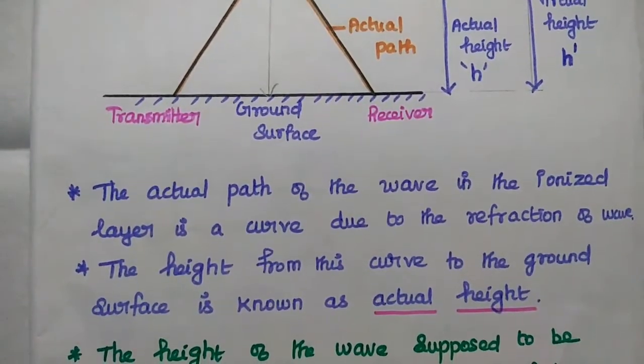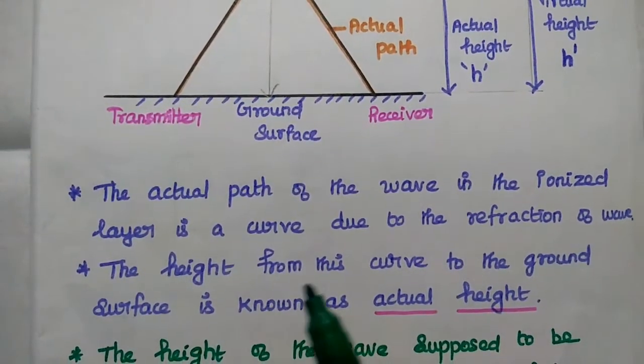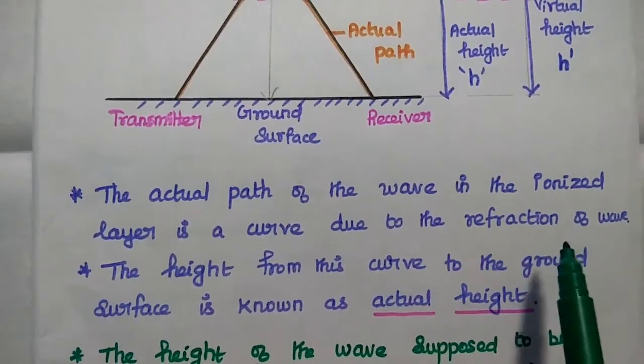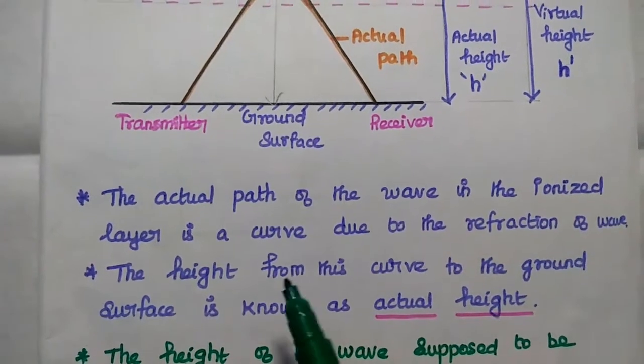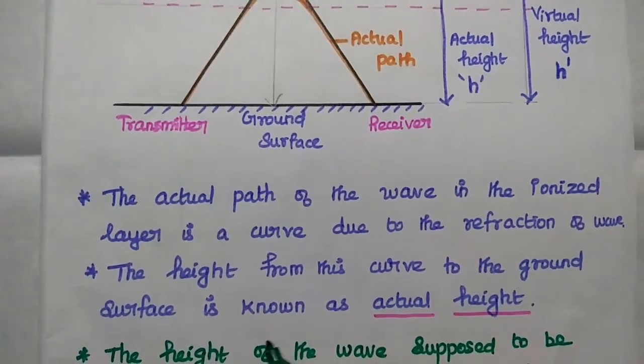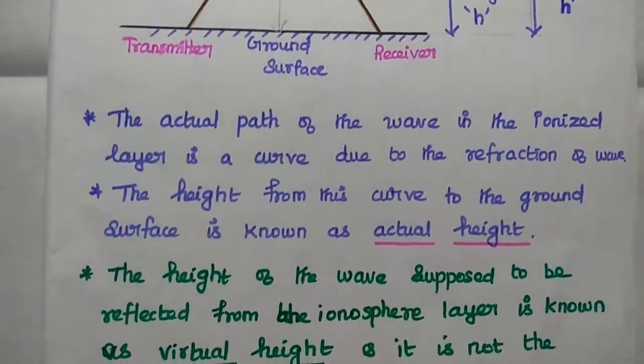The actual path of the wave in the ionized layer is a curve due to the refraction of the wave. The height from this curve to the ground surface is known as actual height.